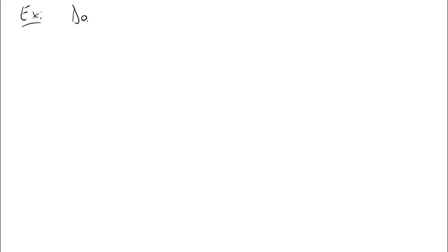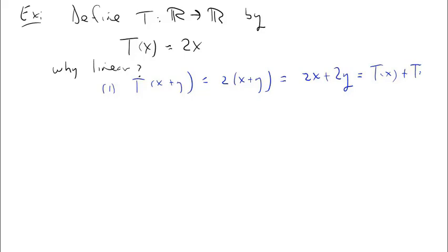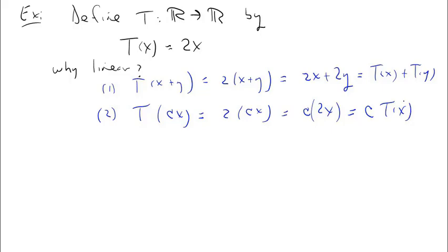Here's an example. Define T from R into R by T of x equals 2x. Why is this linear? We have to prove additivity and homogeneity. For additivity: T of x plus y equals 2 times (x plus y) equals 2x plus 2y, which is T of x plus T of y. Therefore additivity holds. For homogeneity: T of C times x equals 2 times C times x, which by commutativity and associativity equals C times 2x, which equals C times T of x. Since T is additive and homogeneous, T is linear.